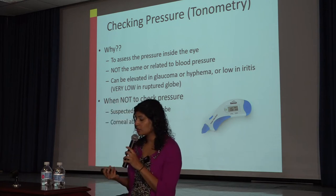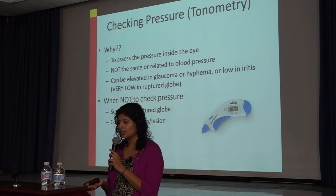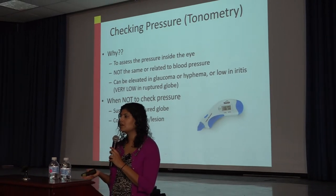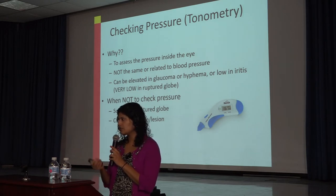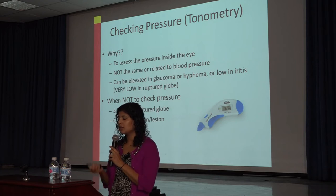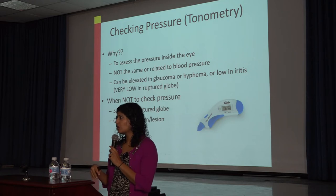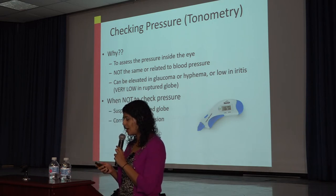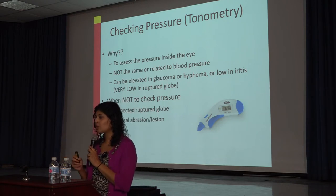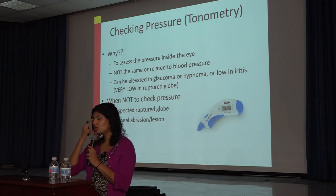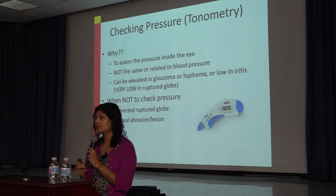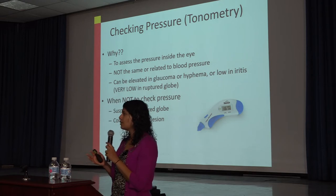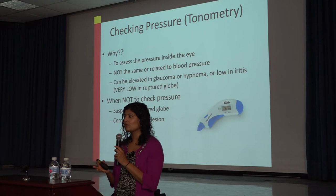Intraocular pressure — we have many tools to measure tonometry. It's important to know because elevated pressure can relate to conditions like glaucoma or acute angle closure, trauma, or blood in the eye. Low pressure can indicate globe rupture. Of course, you don't want to check pressure if you're suspecting a rupture or if there's any abrasion. If you don't have tools, you can palpate the eye — you get a sense of your own normal pressure and compare it to the patient's eye.